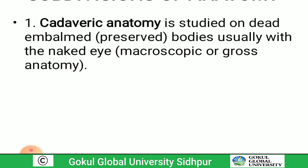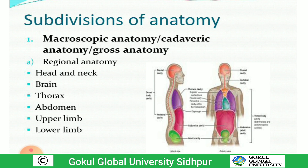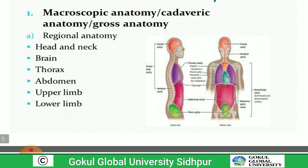Macroscopic anatomy can be studied by regional and systemic approaches. In regional anatomy, the body is studied by region — head and neck, brain, thorax, abdomen, upper limb, lower limb, and gluteal region.